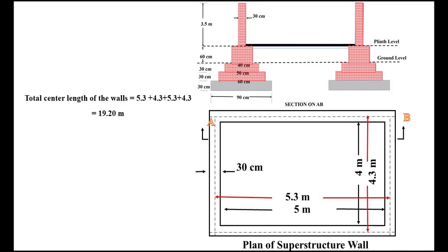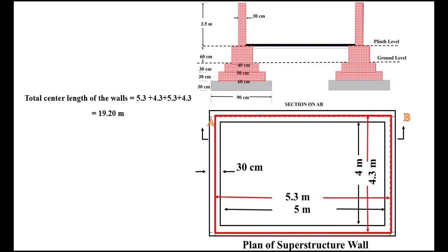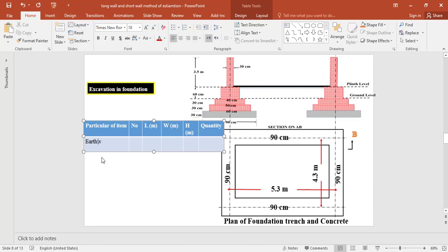Looking at the plan, the center-to-center length of the long wall is 5.3 meters and the short wall center-to-center length is 4.3 meters. Adding all centerlines: 5.3 + 4.3 + 5.3 + 4.3, the total centerline length becomes 19.2 meters.